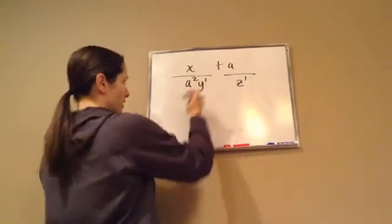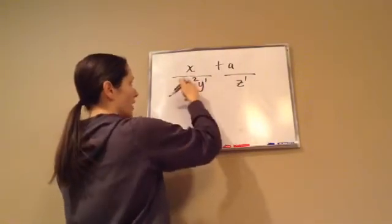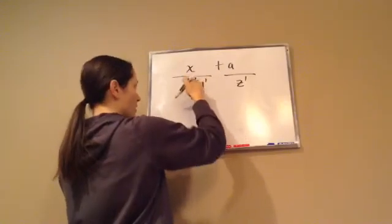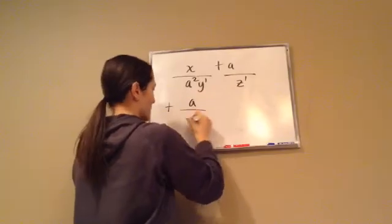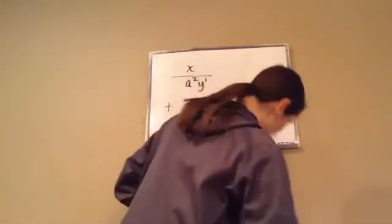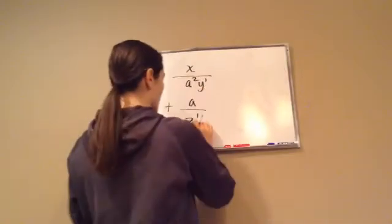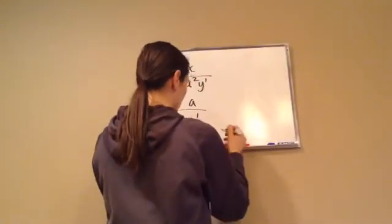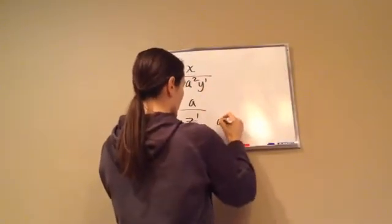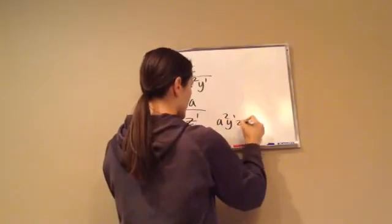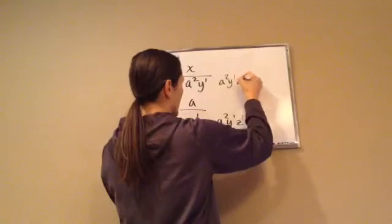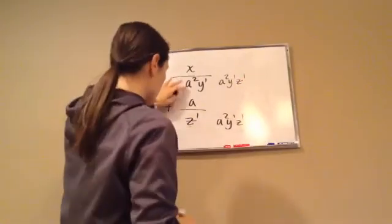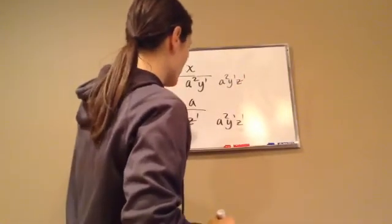So now I'm going to write this vertically. x over a squared y plus a over z to the 1. And all I did was write that vertically. Now let's come up with a common denominator, which is really just writing it all together. So a squared y z. That's combining the denominators, multiplying them.